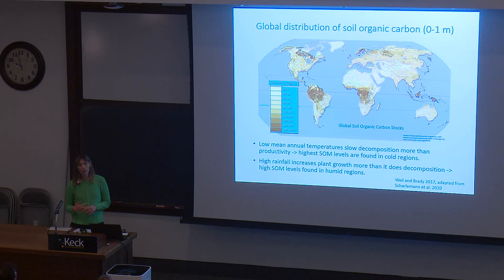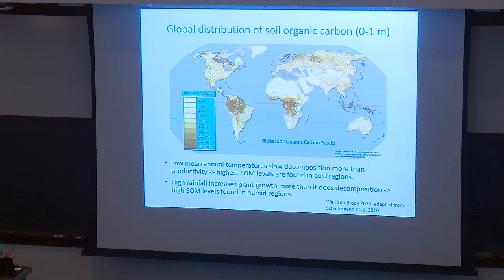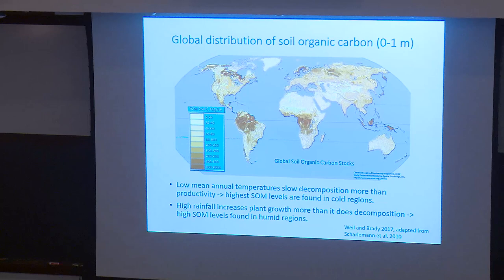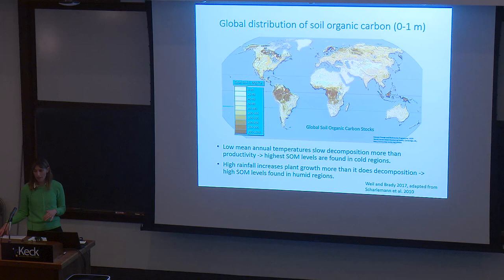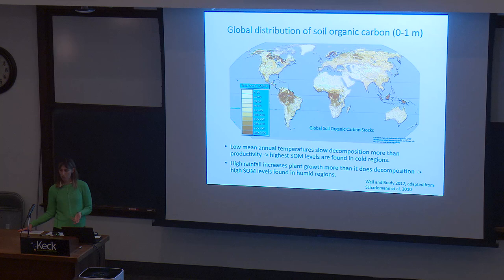In terms of environmental controls on organic matter stocks, it's instructive to look at a map of the distribution of soil organic carbon. The northern latitudes have a lot of soil carbon, shown by darker colors, telling us that low mean temperatures slow decomposition more so than they slow productivity. We also see higher organic matter stocks in more humid environments where high rainfall increases plant growth more so than it increases decomposition.